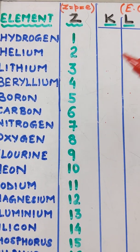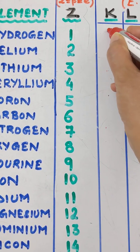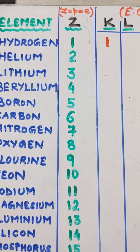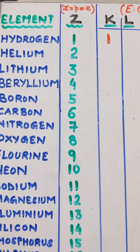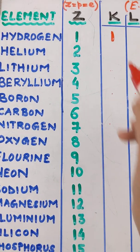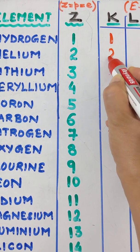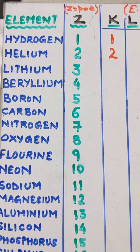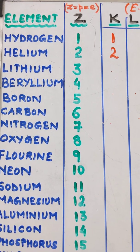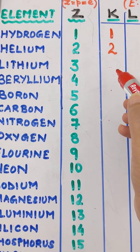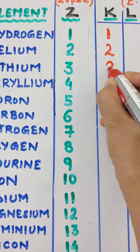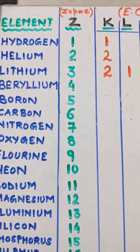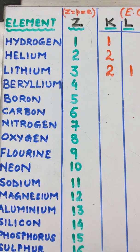Hydrogen has an atomic number of 1, so its electronic configuration is 1 — it has 1 electron in its K shell. Helium has an atomic number of 2, so we put 2 electrons in the K shell. Lithium has an atomic number of 3; K shell can never have 3 electrons, so we put 2 in K and 1 in L — configuration 2, 1. Beryllium has atomic number 4, configuration 2, 2.